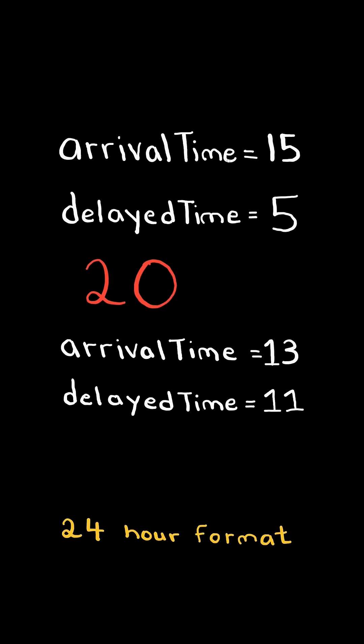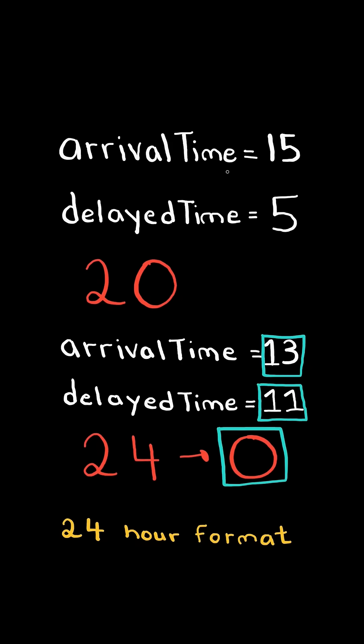Consider this new example. If the train arrives at hour 13 and is delayed by 11 hours, then it would come at the 24th hour, which is denoted as 0 in a 24-hour format. We will solve this in constant time.